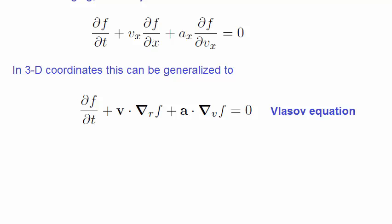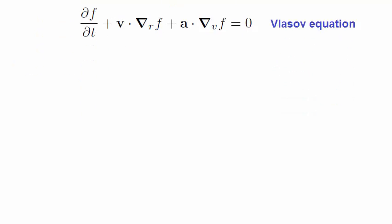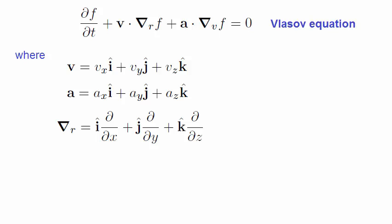Note the definitions of some of these terms. The vector for velocity and acceleration are given as usual. However, note that grad subscript r is given by this, where we are differentiating with respect to the spatial coordinates. And that grad subscript v means we are differentiating with respect to the velocity coordinates.